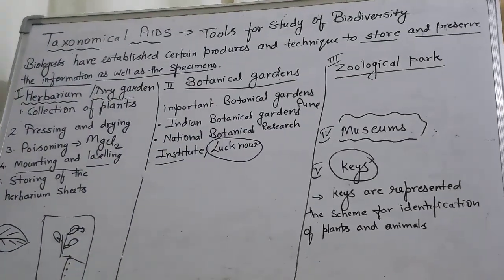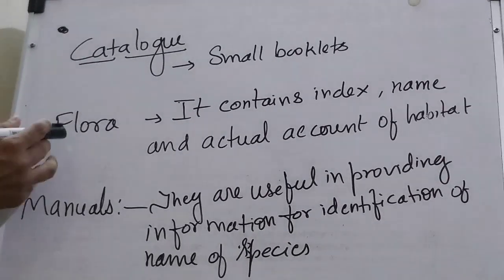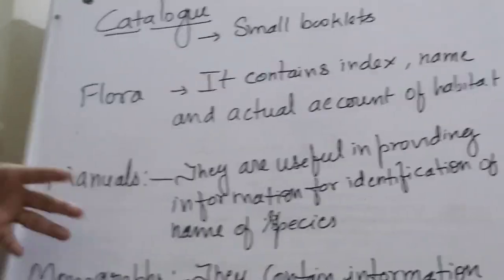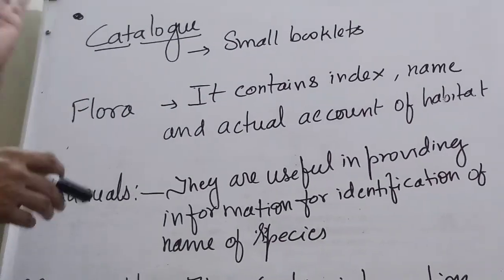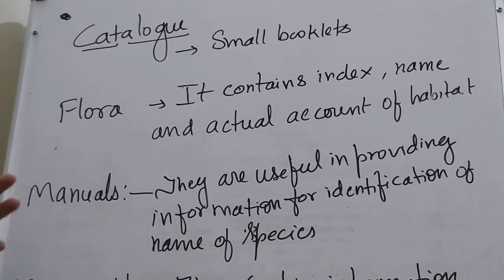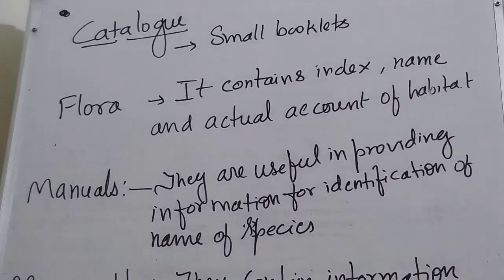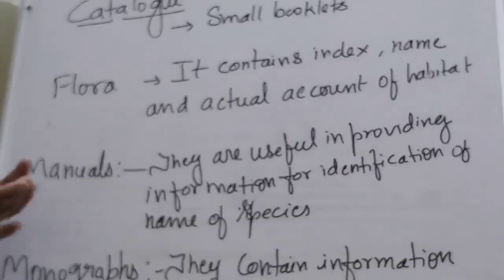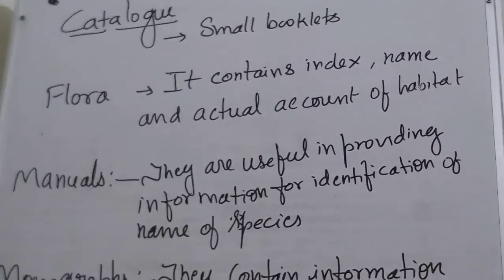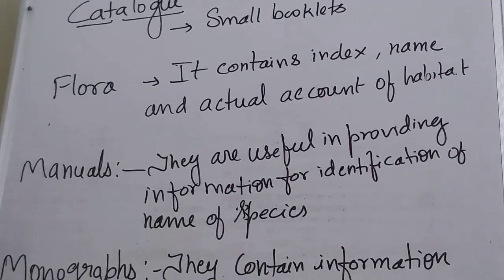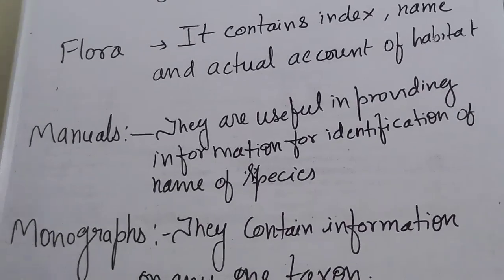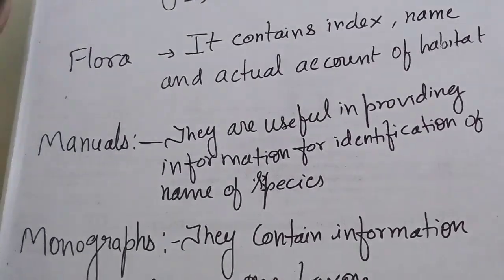So we have discussed herbarium, botanical garden, zoological park, museum and key. Now the remaining taxonomical aids are: catalogues, flora, manual, and monographs. These are the two-mark questions asked in your NCERT textbook — the last paragraph covers these four aids. A catalogue is like a small booklet. Suppose you visit somewhere and don't know where to go — a small booklet gives you direction. Similarly, in a museum a catalogue gives you guidance.